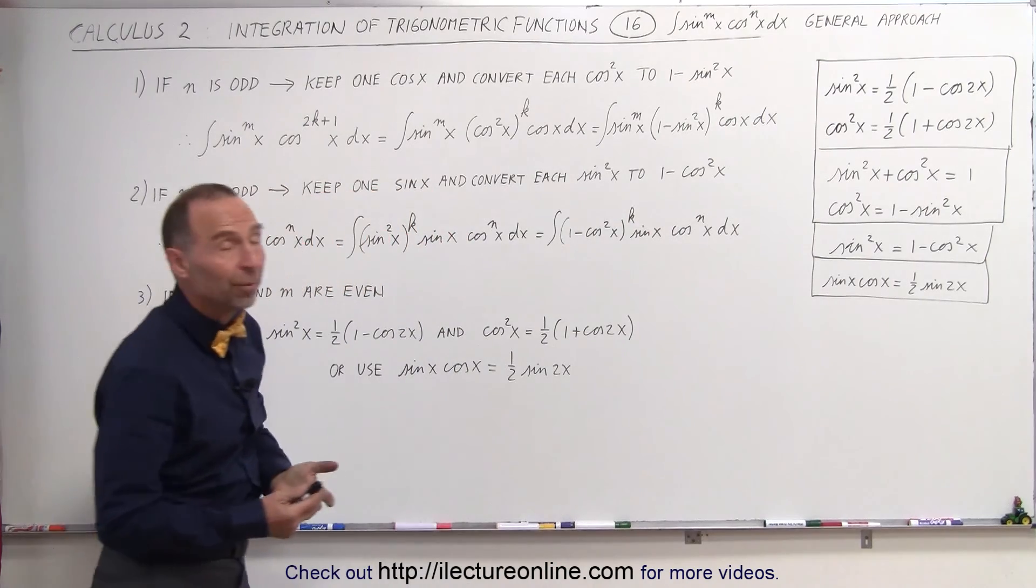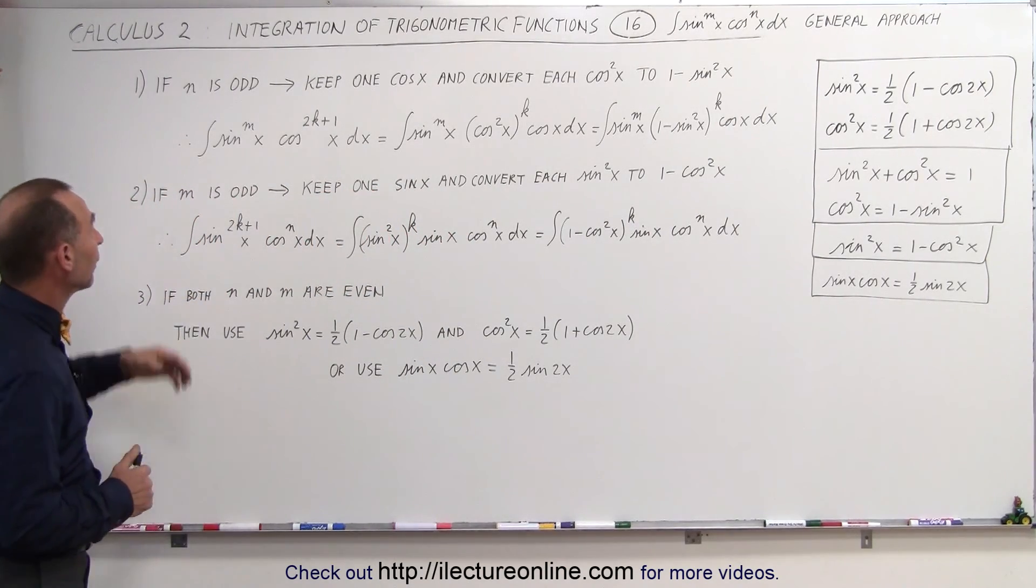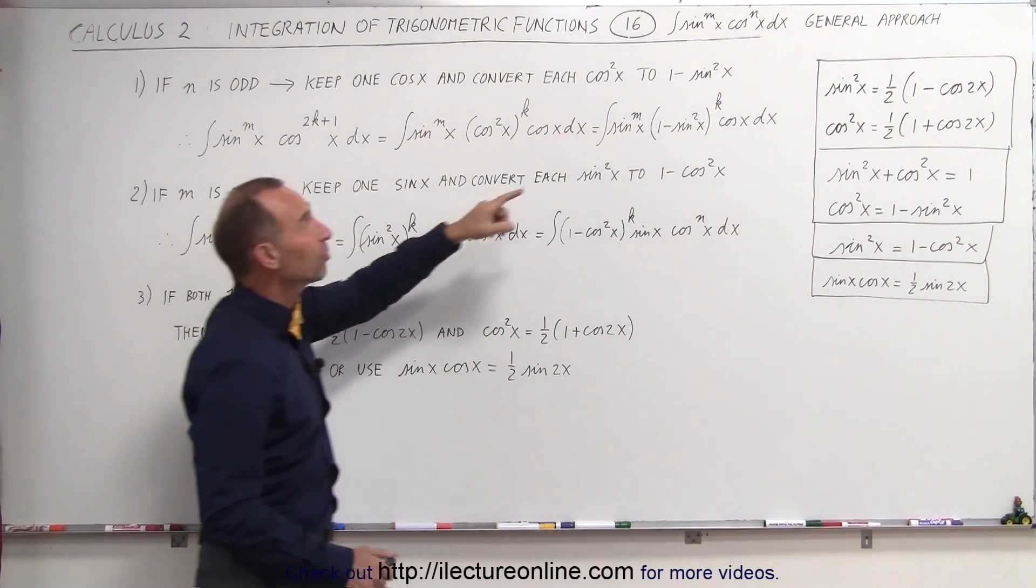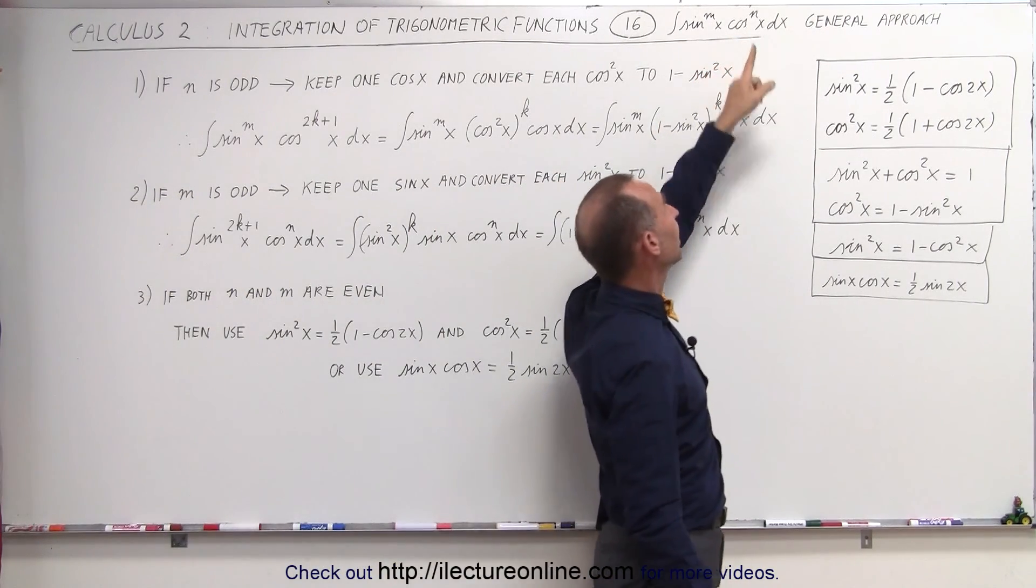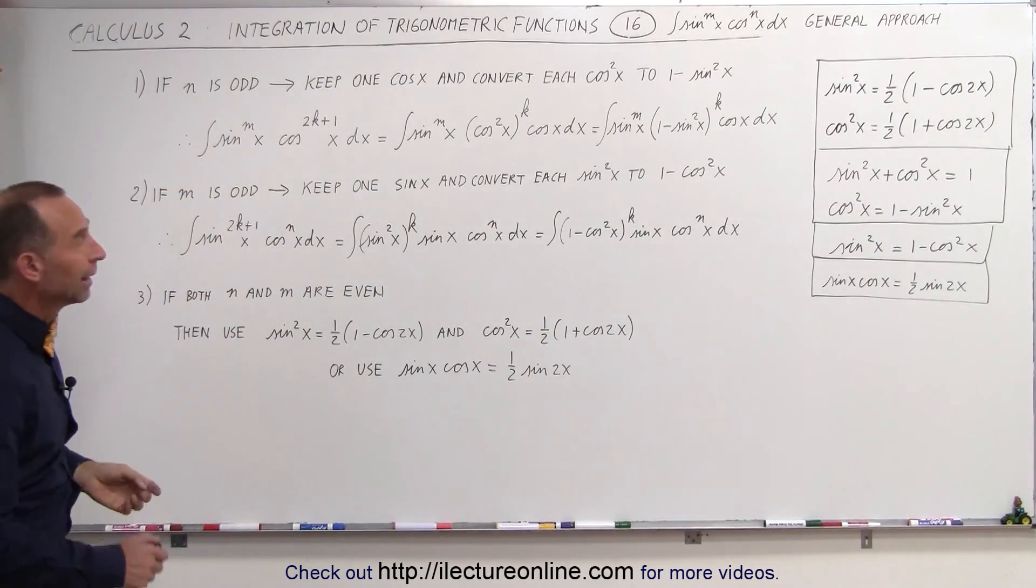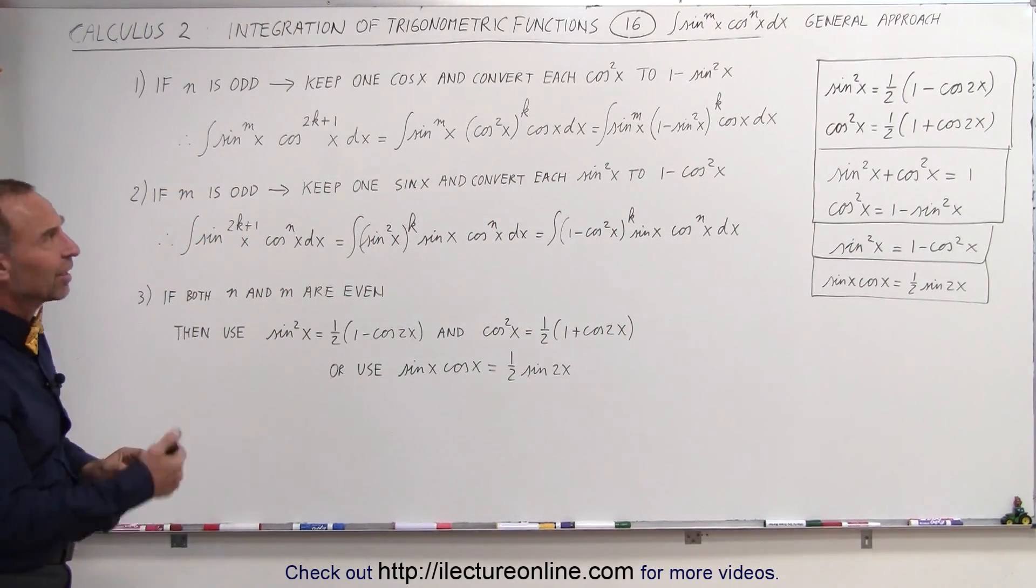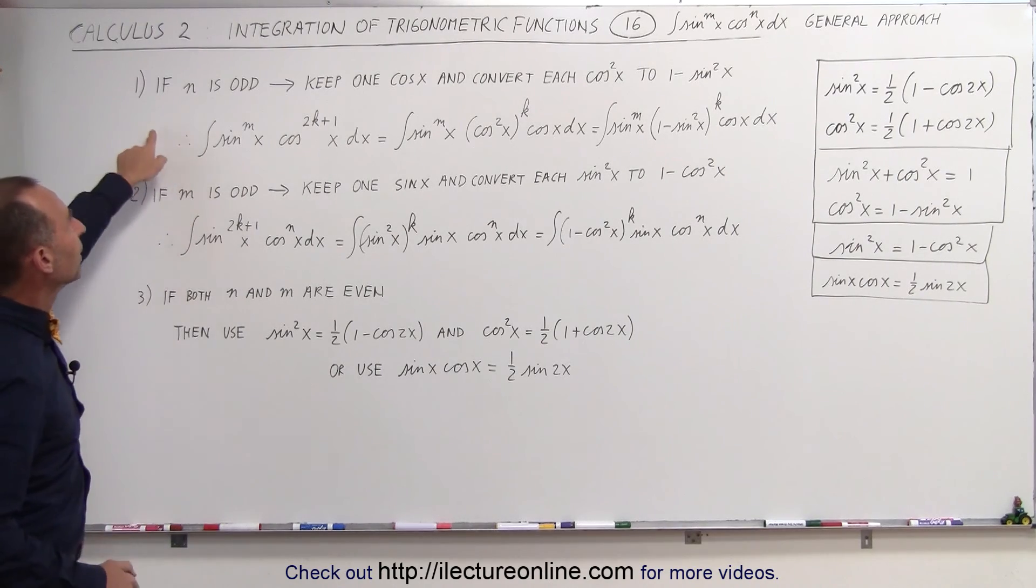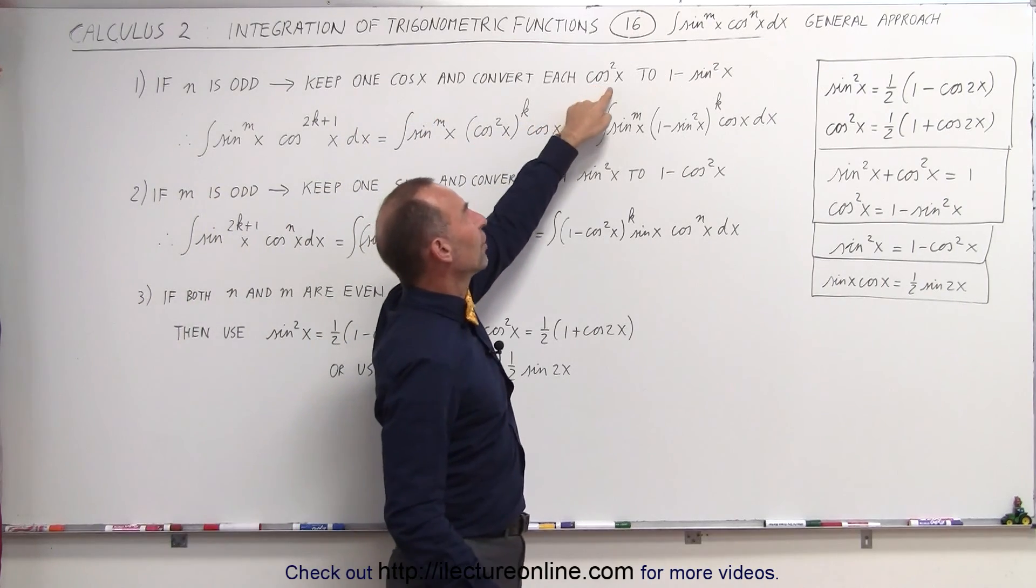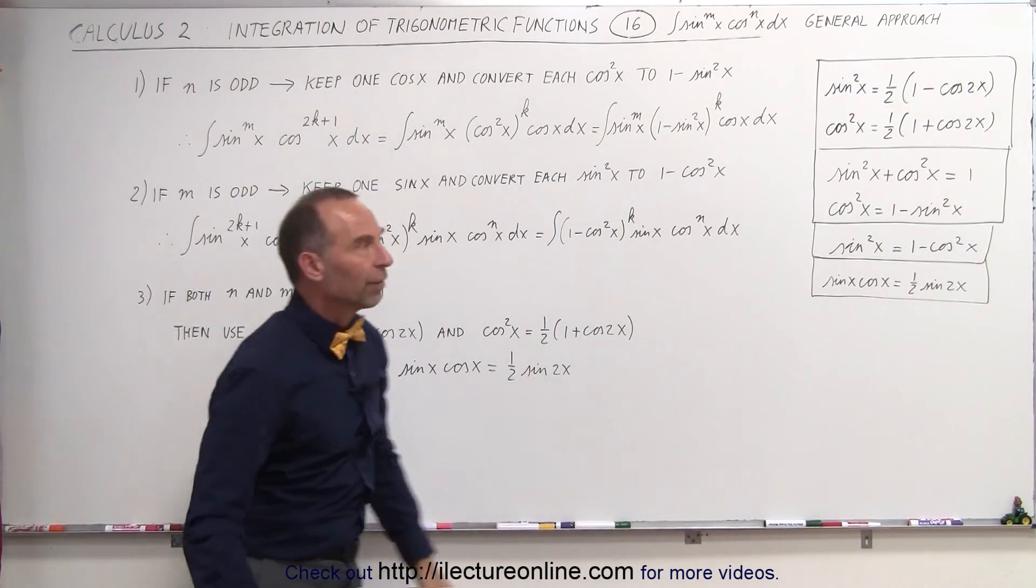M and N represent integers greater than 1. Now, in the case if N is odd, so if the exponent on the cosine is 3, 5, 7, or so forth, then what you do is you keep one of the cosines and convert each of the remaining cosine squares to 1 minus the sine squared of x.